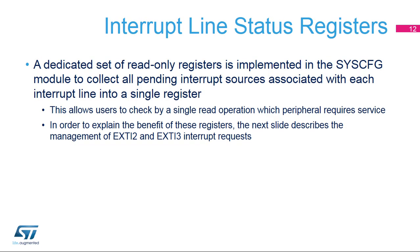The SYSCFG module supports 32 interrupt line status registers. They enable software to easily find the cause of an EXTI interrupt by collecting in the same register all pending interrupt sources associated with a particular interrupt line. The following slide will focus on the EXTI2 and EXTI3 interrupt lines to explain the benefit of these registers.